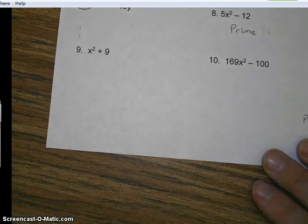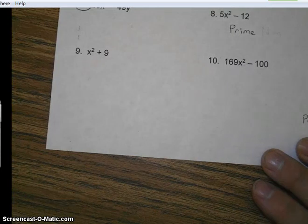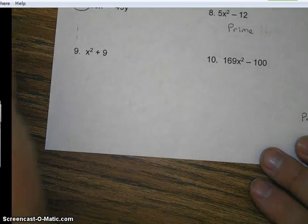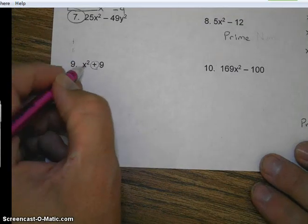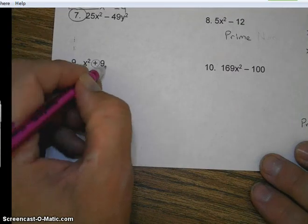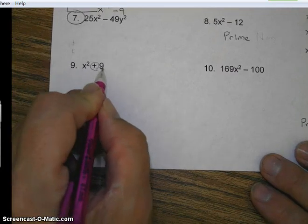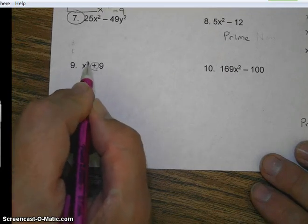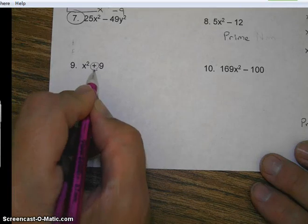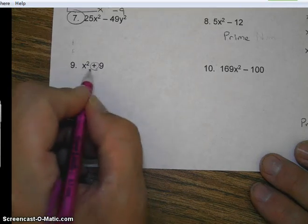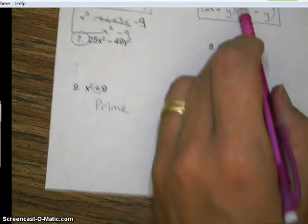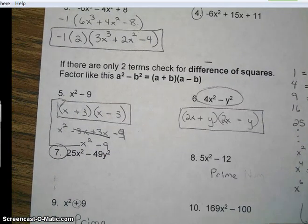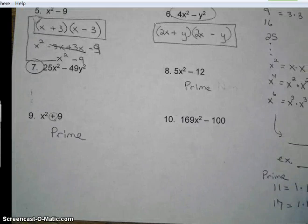Notice number 9. What do you notice? Well, I hope that you notice that it's not a difference of two squares. Yeah, that's a perfect square. Yes, that's a perfect square. But it's not a difference. It's a sum of two squares. And this cannot be factored. So this is prime. It has to be the difference. Remember the word difference means to subtract.